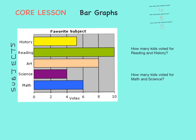What if we wanted to know how many kids voted for two different groups? For example, how many kids voted for reading and history? Reading received ten votes and history received five votes. If we want to know how many kids voted for reading and history, we'd have to add those together. Ten plus five equals fifteen.